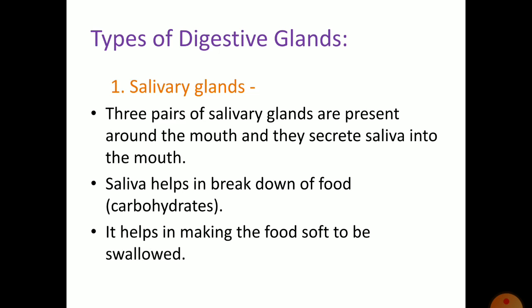Types of digestive glands — let's study the glands and their functions in detail. The first is the salivary glands. Three pairs of salivary glands are present around the mouth and they secrete saliva into the mouth. Saliva helps in the breakdown of carbohydrates found in the food and helps in making the food soft so that it is easy to swallow.